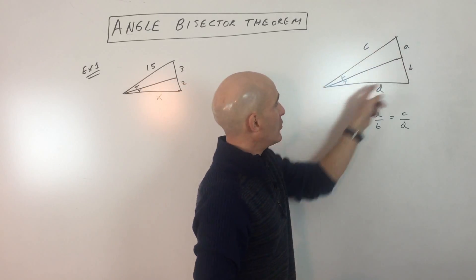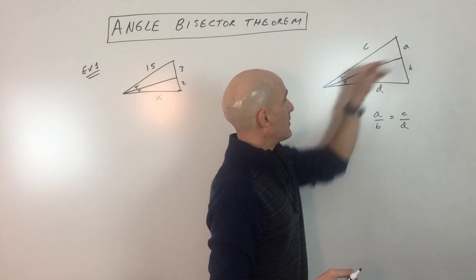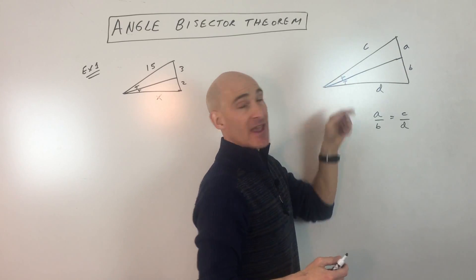What the bisector theorem tells us is that you have a triangle and you draw a ray, or a segment that bisects, meaning it cuts the angle in half.